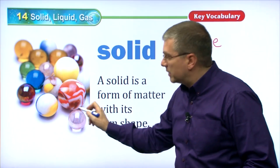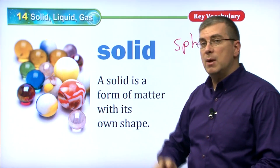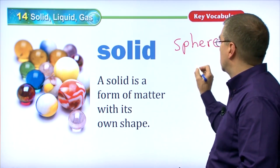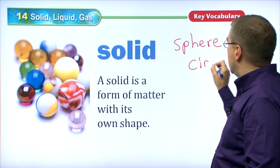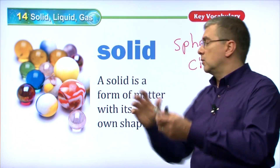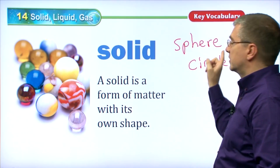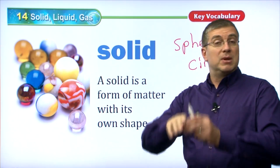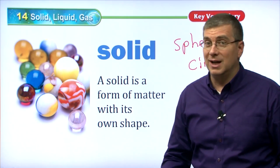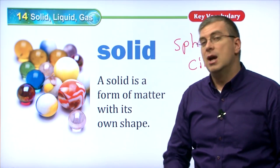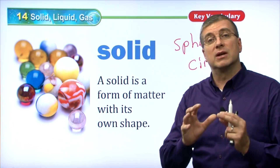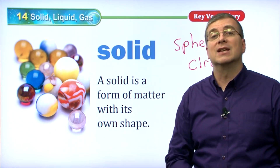A sphere — this is a sphere. It's a round shape but it has three dimensions. Just two dimensions would be a circle. Of course, solids have three dimensions, so we say it's a sphere. Solids can be triangular in shape. They can have a shape that we can't describe. Some shapes are very strange, but a solid has a certain type of shape and that shape doesn't change.